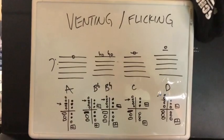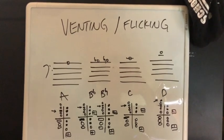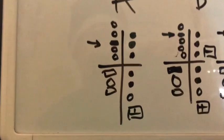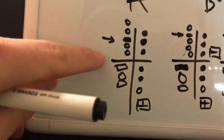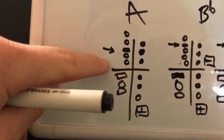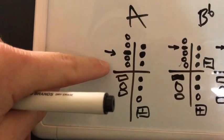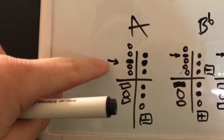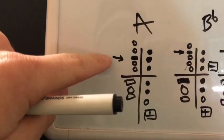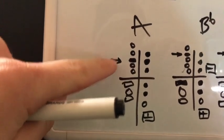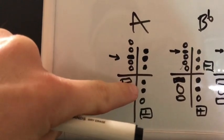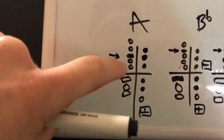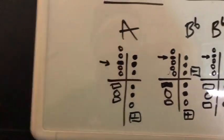So here we're going to have fingerings for each of these venting and flicking notes. A is our first one. So you have the whisper key at the bottom that will be lifted up. And then one, two up is going to be our A flick. The same fingering as regular low A, one, two, three, and one, two in the left and right hand. But flicking or venting that key there.